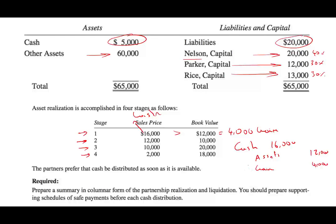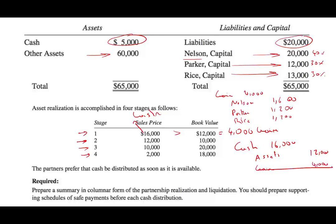Then what do they do with this gain? The gain is debited and they allocate the $4,000 gain to the three partners. They credit Nelson's capital — Nelson is 40%, giving Nelson $1,600. For Parker and Rice, $1,200 each because their profit sharing is 30%. So we got rid of the gain and allocated it. That's the first sale.